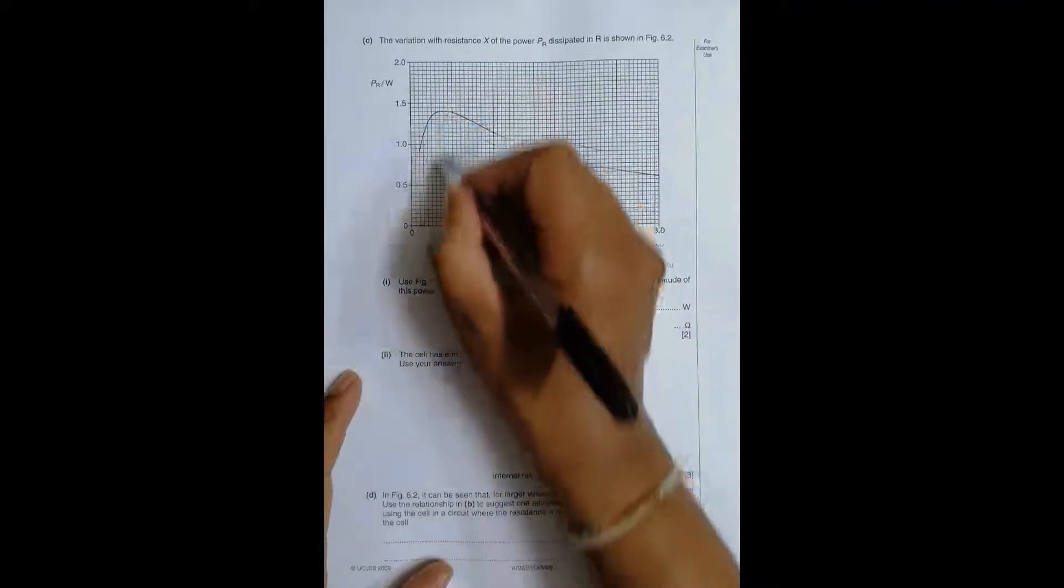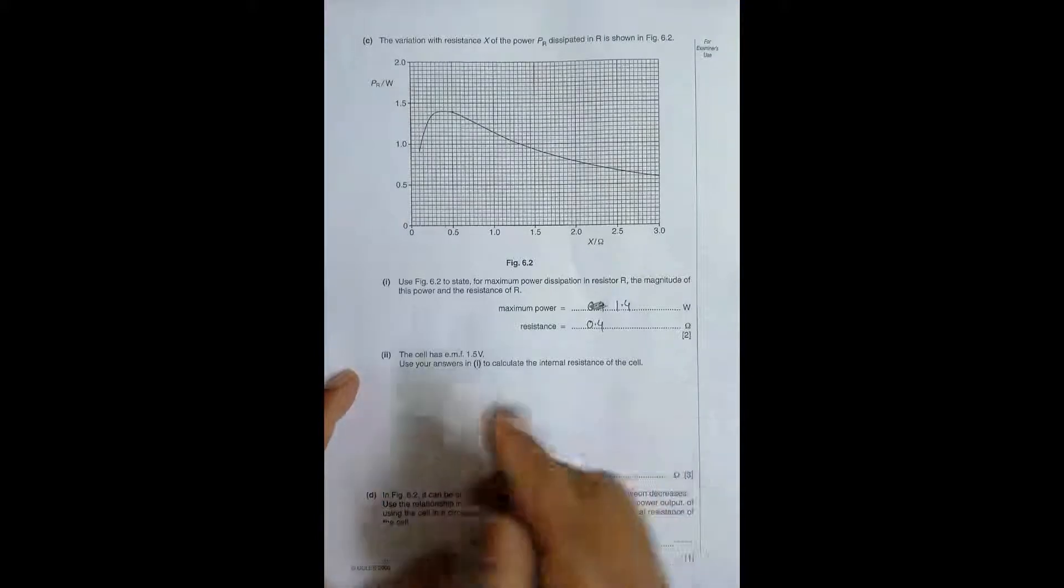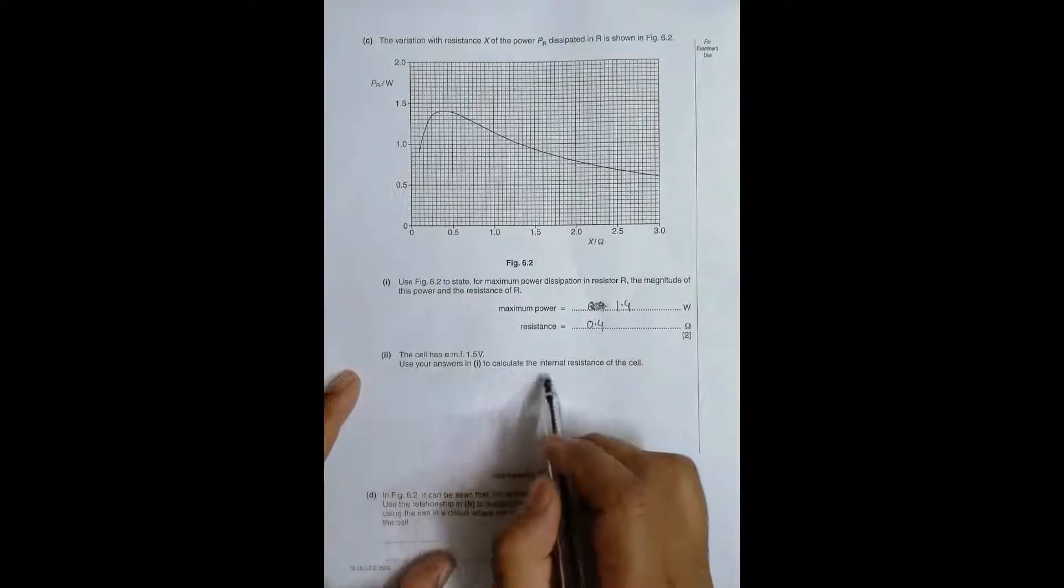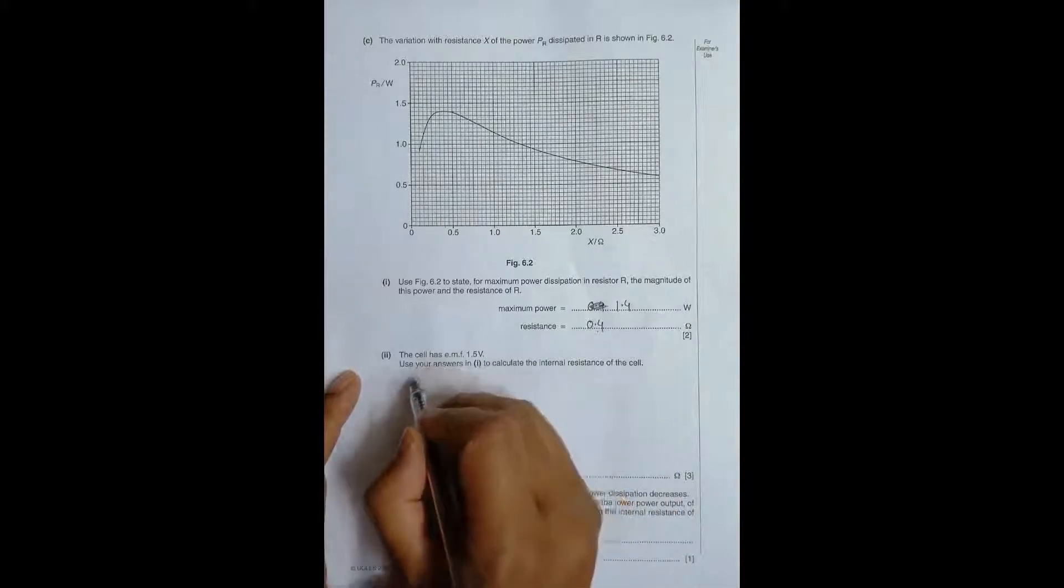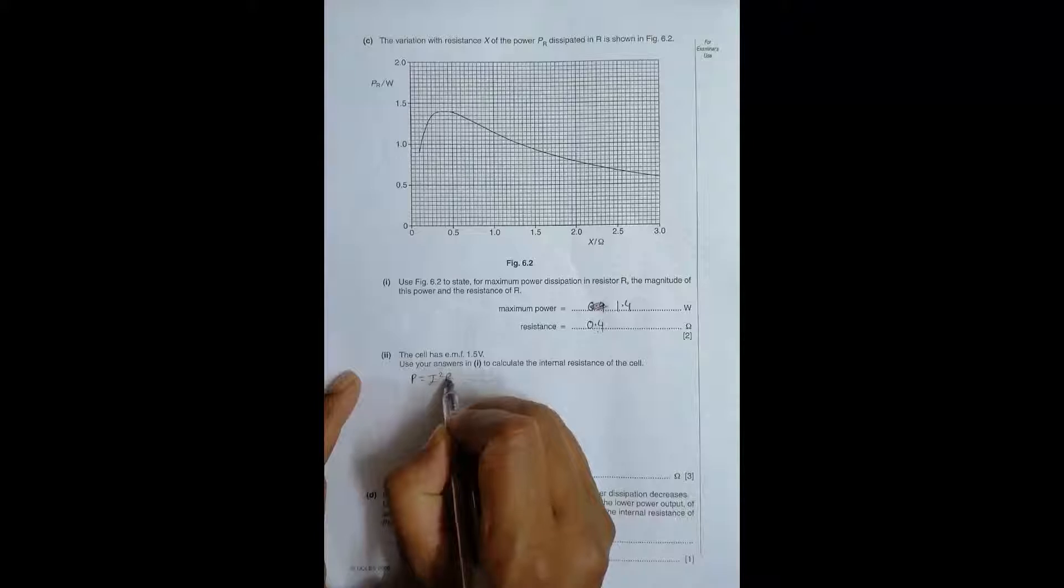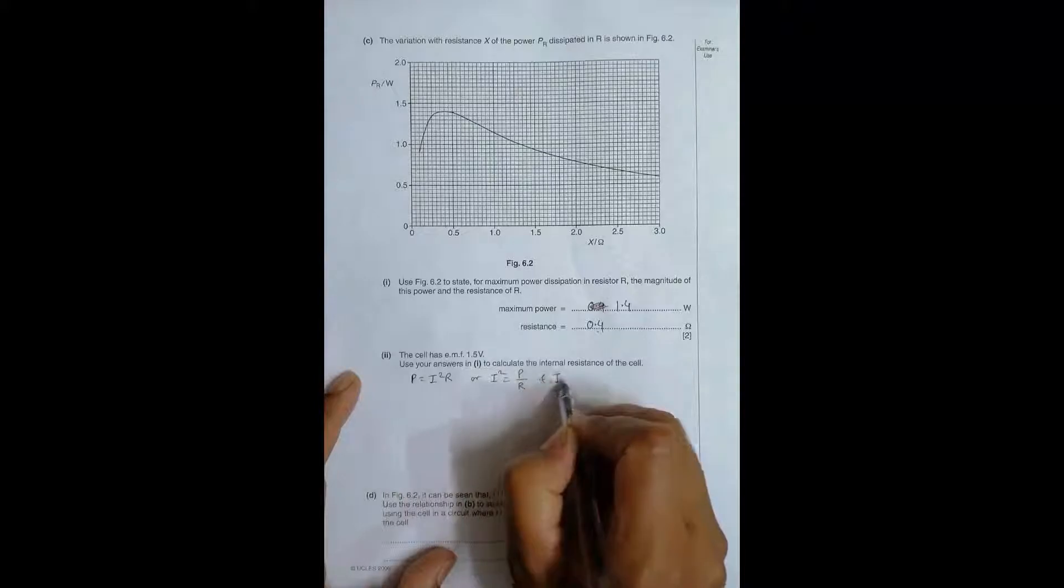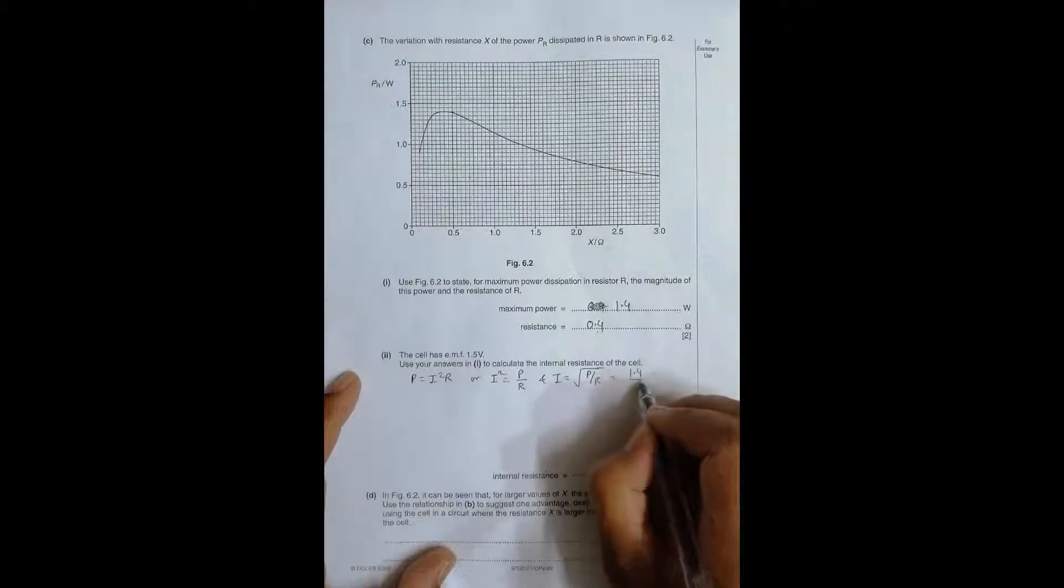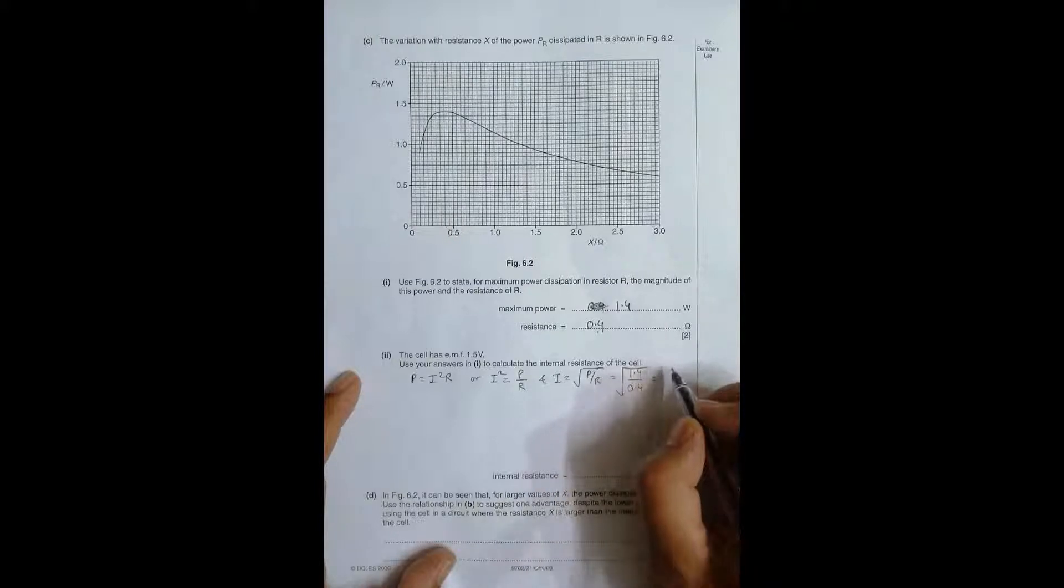The cell has EMF 1.5 volt and we need to calculate the inner resistance. From these two values I first need to find the current. We know that power equals I square R which gives us I equals root of P by R. This will be equal to root of 1.4 by 0.4 and its value equals 1.87 ampere.